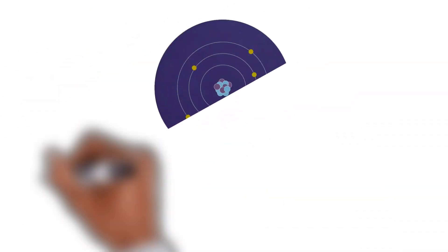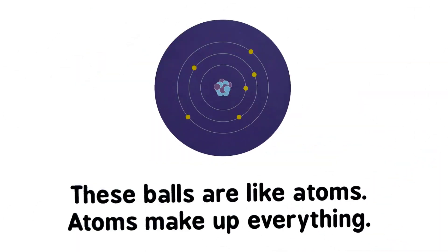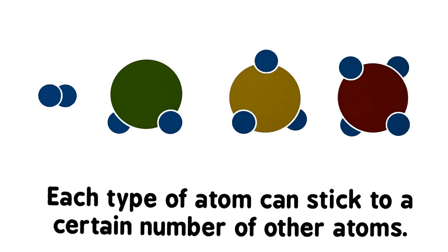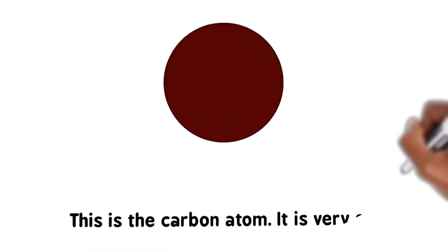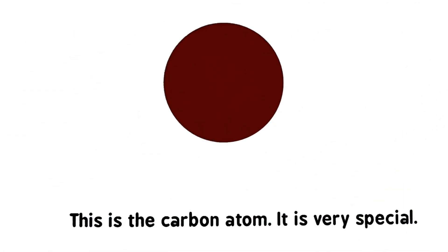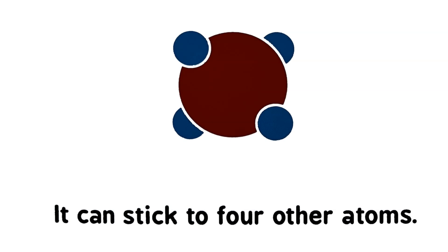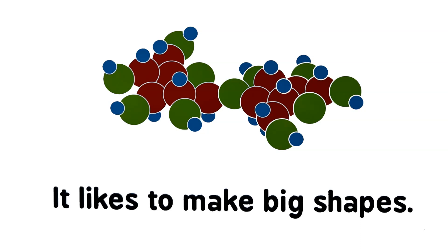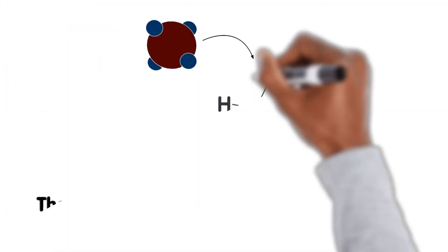These balls are like atoms. Atoms make up everything. Each type of atom can stick to a certain number of other atoms. This is the carbon atom. It is very special. It can stick to four other atoms, and it sticks very well. It likes to make big shapes. These shapes are called organic molecules.